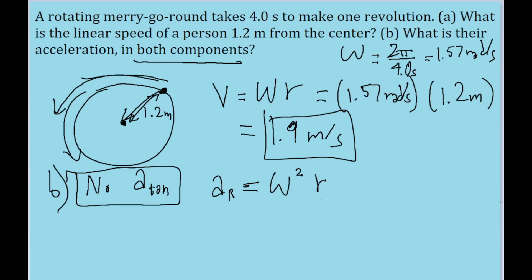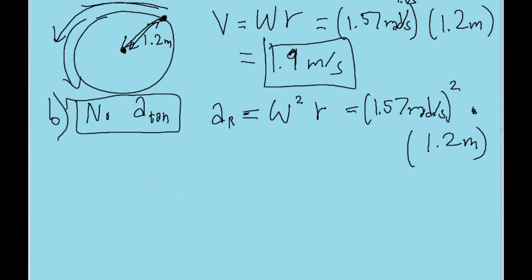Both of these variables we just used already in part A, except the only difference is that the omega is getting squared now. So all we've got to do is put into our calculator 1.57 radians per second squared, and multiply that by the radial distance 1.2 meters,